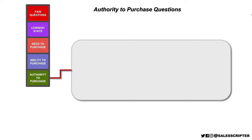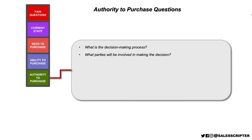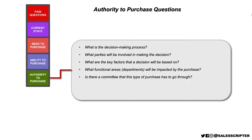For authority to purchase, instead of directly asking 'are you the decision maker?' — which the prospect might just say yes to regardless — I like to ask: What is the decision-making process? Then continue step by step: and then what's next? Try to identify each step until the contract is signed. That process will usually make it extremely clear who the decision maker is and who all the influencers are. What parties will be involved? What are the key factors the decision will be based on? What functional areas or departments will be impacted? Is there a committee? Who is the ultimate decision maker? Who will sign the contract?